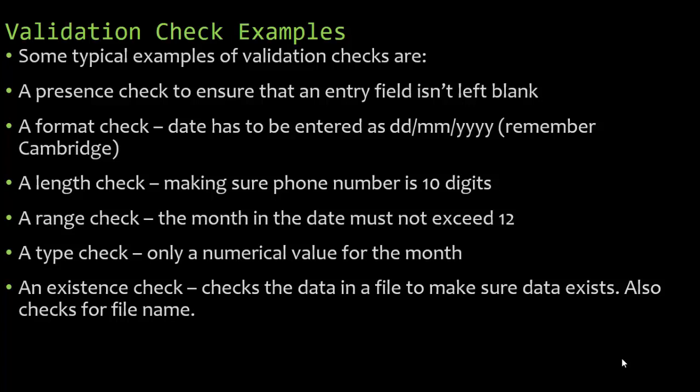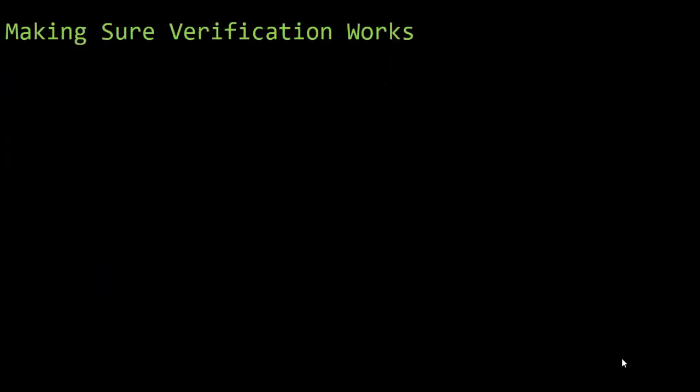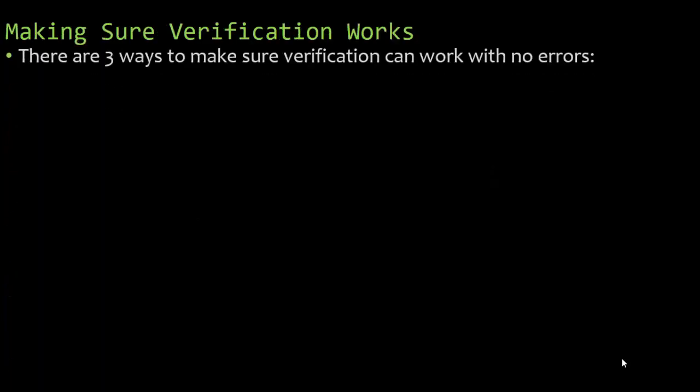An existence check checks the data in a file to make sure data actually exists, and also checks for the file name. A limit check checks only one of the limits — either the lower or the upper limit. It does not check both.